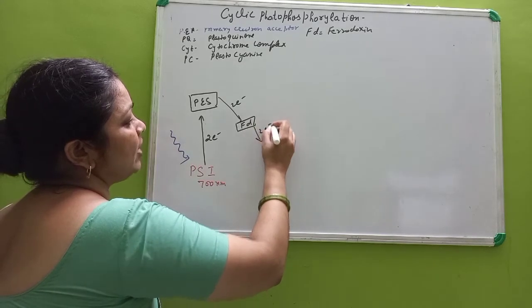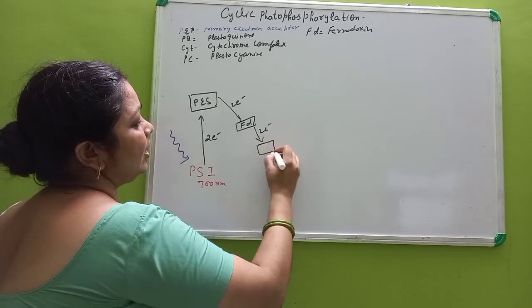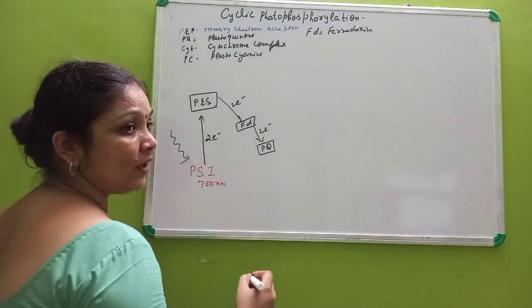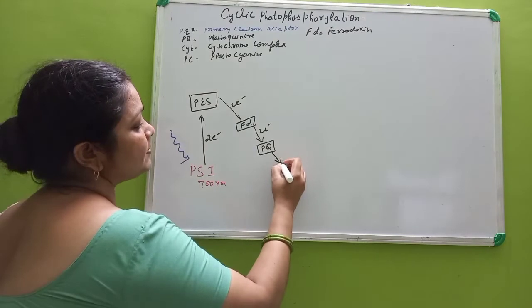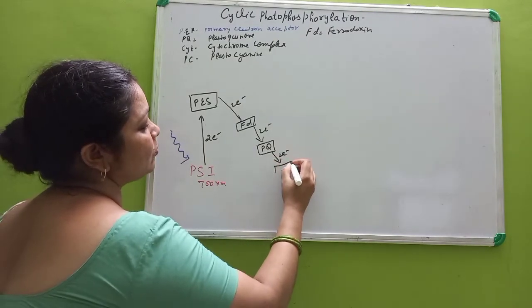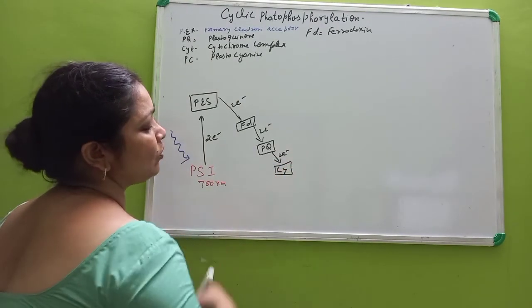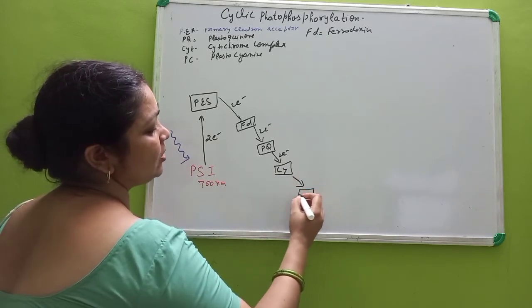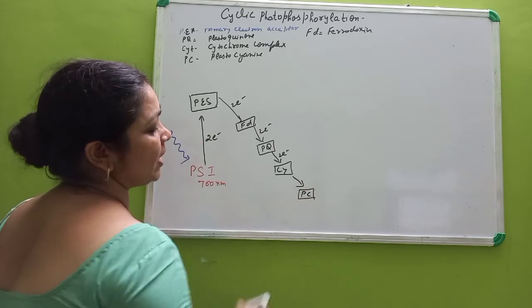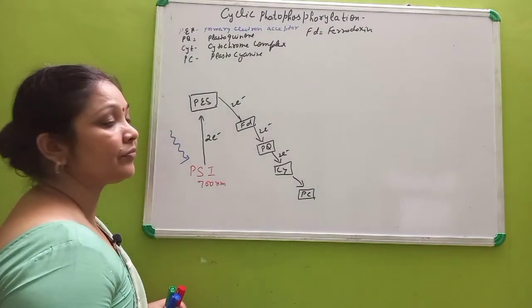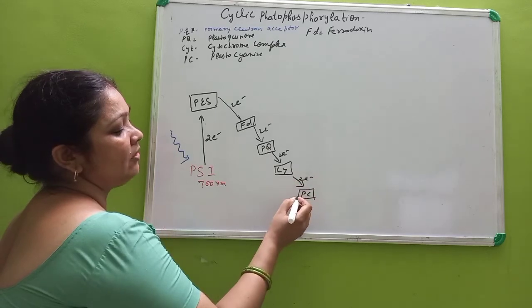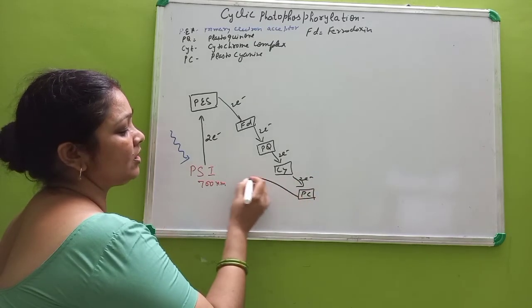Then it passes to the next level and is accepted by PQ, that is plastoquinone. Then again it passes to next and is accepted by cytochrome complex. And then it passes to the next and is accepted by plastocyanin, that is PC.